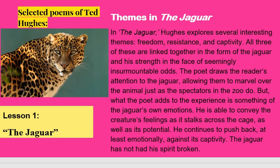Themes in the poem — The Jaguar. Hughes explores several interesting themes: freedom, resistance, and captivity. All three are linked together in the form of the Jaguar and his strength in the face of seemingly insurmountable odds. The poet draws the reader's attention to the Jaguar, allowing them to marvel over the animal just as the spectators in the zoo do. What the poet adds is something of the Jaguar's own emotions — its feelings as it stalks across the cage, and its potential. He continues to push back, at least emotionally, against his captivity. The Jaguar has not had his spirit broken.